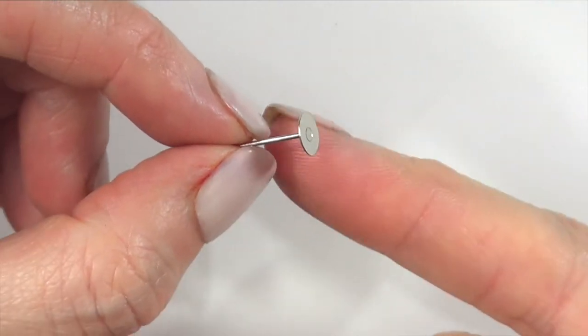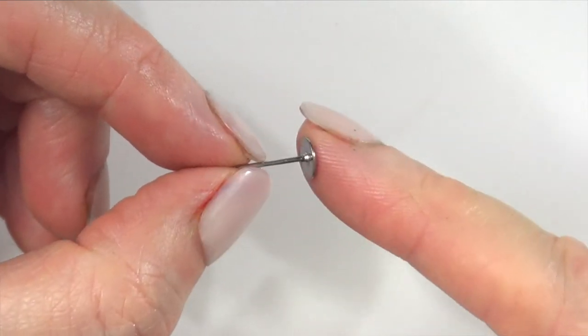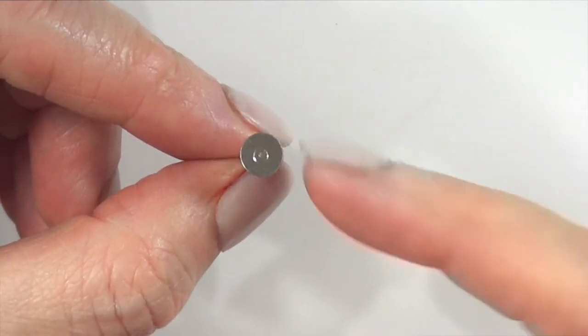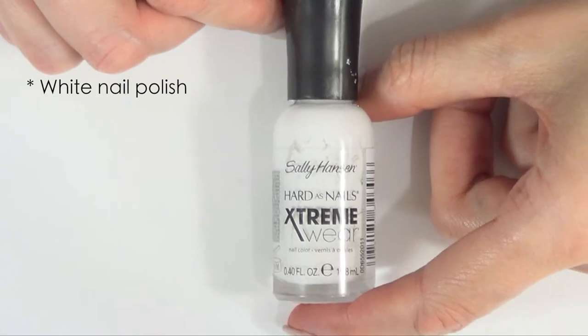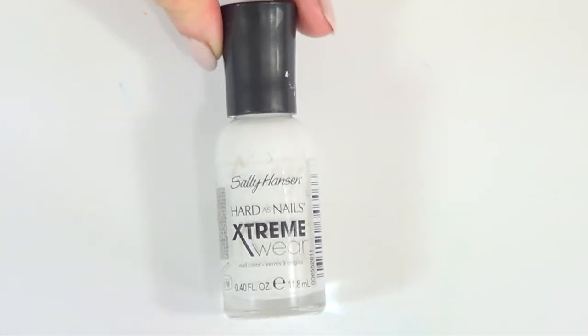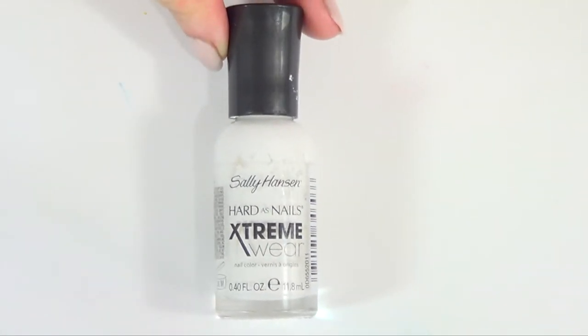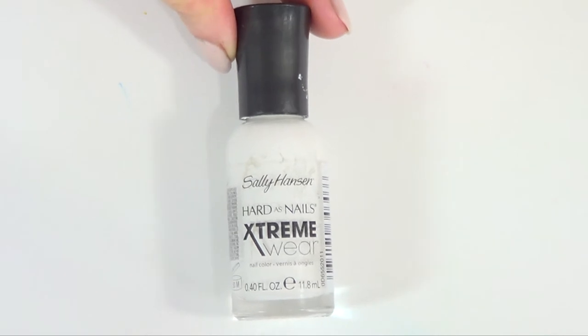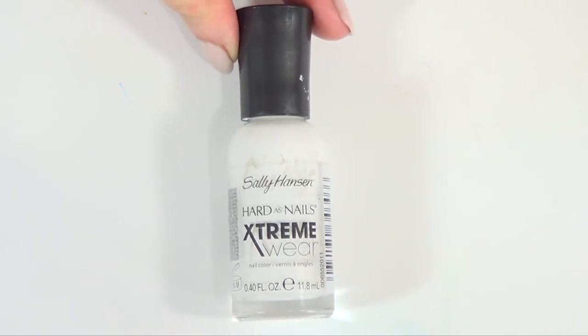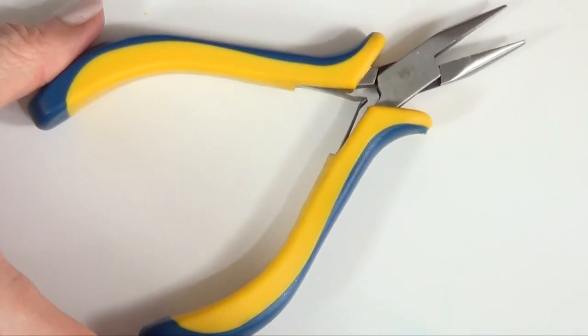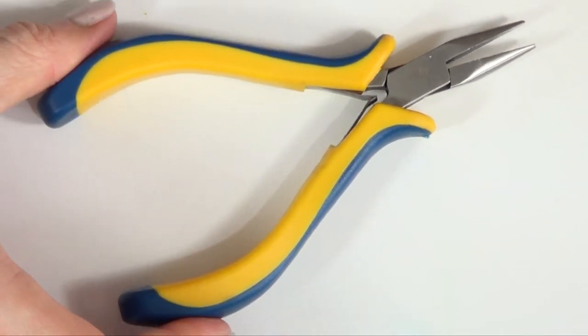For this one, we're going to be starting with flat earring posts. I'm going to be using a couple of them and some white acrylic paint. If you have nail polish in the color that you want your earrings to be, just use that instead of the white. I didn't have it in teal, so that's why I'm using white. Then I'm going to be using some pliers just to make this easier.